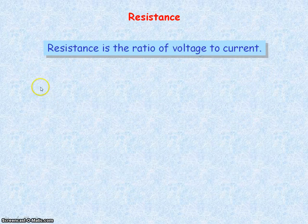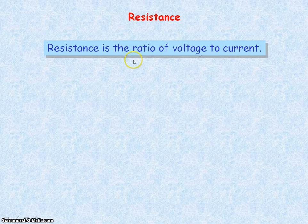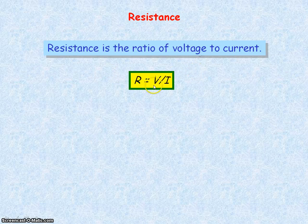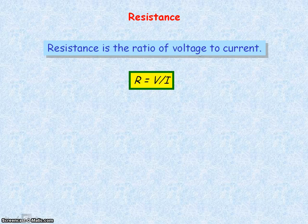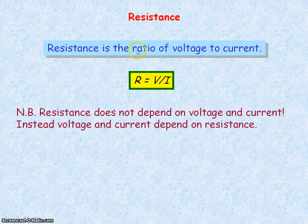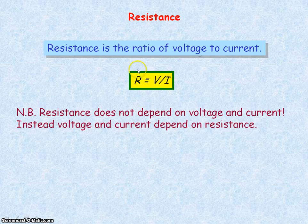Resistance is defined as the ratio of voltage to current, or voltage divided by current. This is the equation for resistance. It's important to note, though, that the resistance does not depend upon the voltage or current through it.